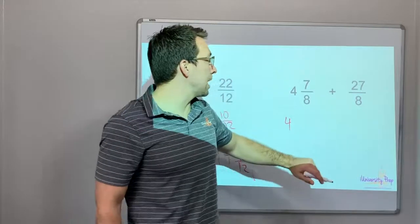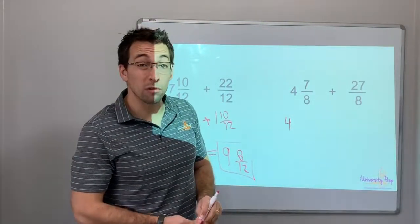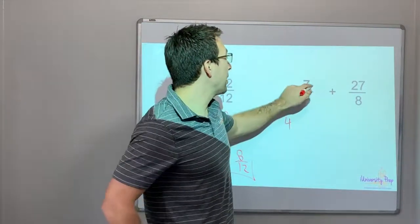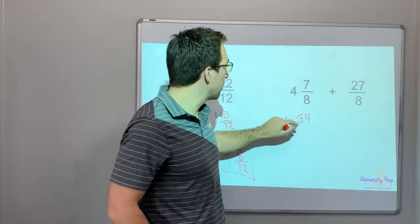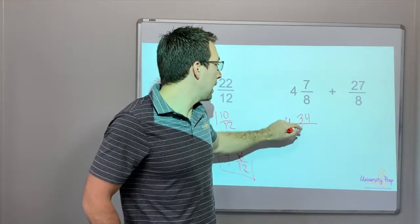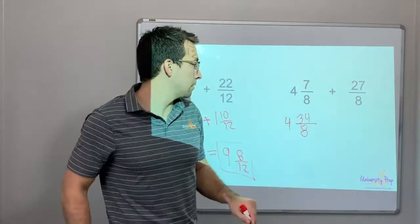4... 7 plus 27 is 34, right? Okay. So why don't we just do this - 34/8. 4 and 34/8.